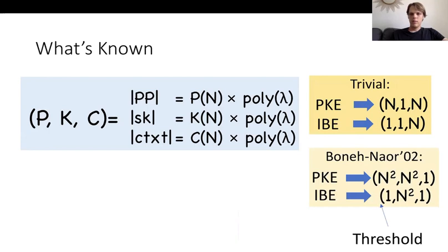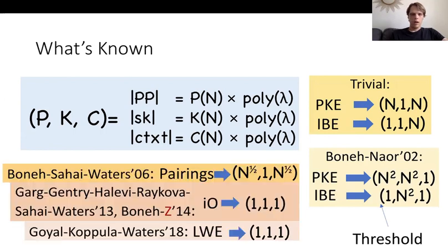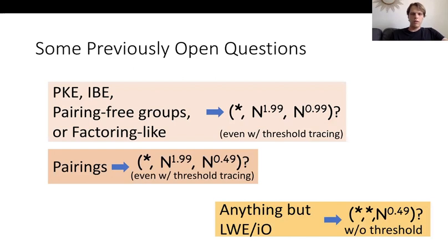So what is known? On the right, we have some schemes built from generic tools like public key encryption or identity-based encryption. Up on the upper right is a very easy way to build traitor tracing. At the bottom right is the Boneh-Naor scheme with its quadratic secret keys and constant-sized ciphertexts. On the bottom left, we have some algebraic schemes that improve on these parameters: a scheme from pairings by Boneh, Sahai, and Waters that gets n^(1/2) public keys and ciphertexts with constant-sized secret keys. Using indistinguishability obfuscation, all parameters simultaneously become constant size. More recently, Goyal, Koppula, and Waters achieved similar parameter sizes from LWE.